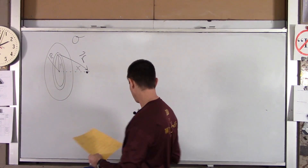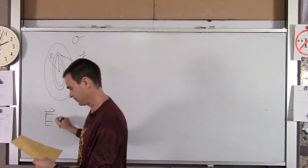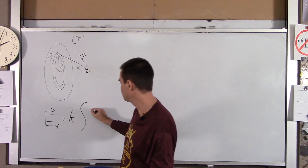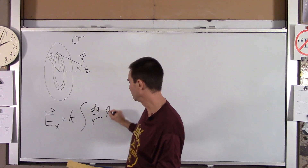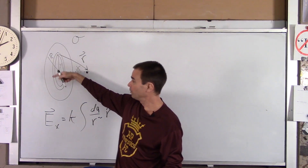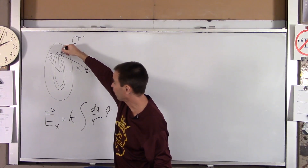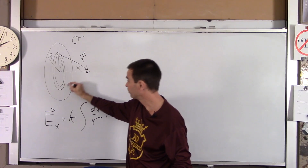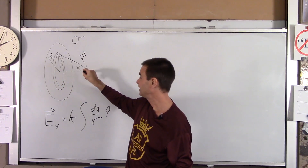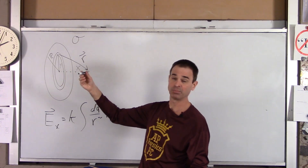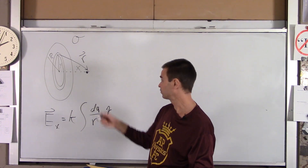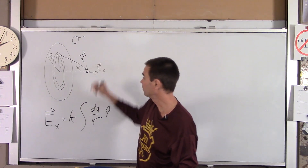We're going to start with our equation for electric field: E = ∫ k dq/r² in the r-hat direction. Now, just like with the ring we did in class, this part of the ring has a down-and-right field, that part has an up-and-right field — the up and down components cancel. Similarly, the into-the-board and out-of-the-board components cancel. The only component of the electric field that remains uncanceled is E sub x, so we're going to find E sub x.